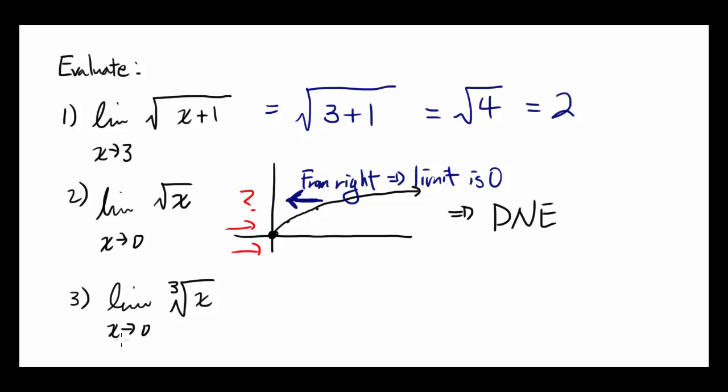Let's look at the third one. Limit as x approaches 0 of cube root of x. Now, cube root of x is defined for all x, no matter if it's negative or positive, it goes like this.